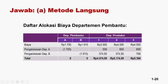Rekapitulasi metode langsung: awalnya departemen A=1.700, B=1.915, produksi 1=3.000, produksi 2=4.000, produksi 3=4.500. Setelah pengalokasian, departemen A dan B nilainya 0—tidak ada biaya yang tersisa. Seluruhnya sudah teralokasikan ke departemen 1, 2, dan 3. Ini adalah direct method atau metode langsung.